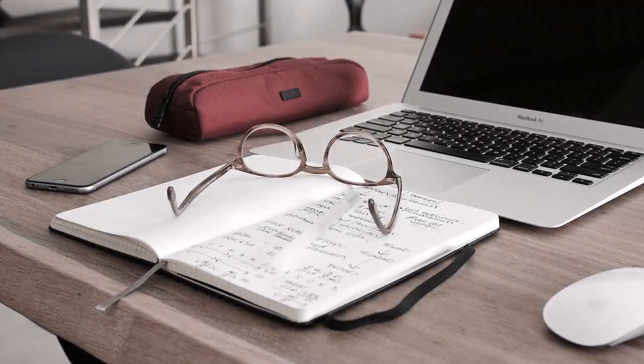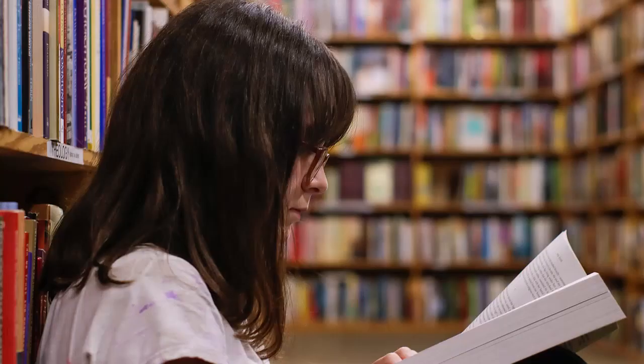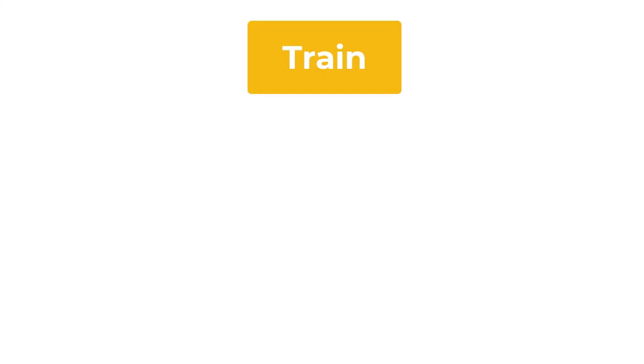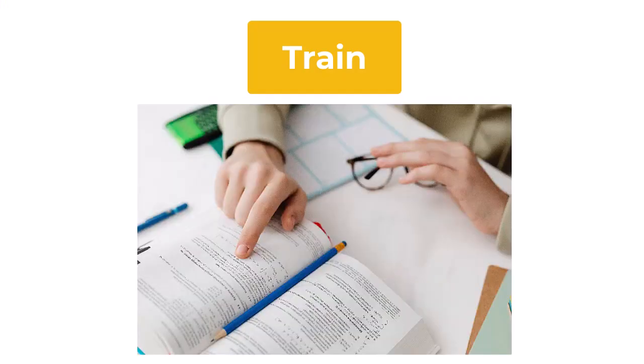Training a model is kind of like studying for an exam. Imagine a model is like a student. If you don't study, you're likely to perform poorly on the exam. Your Train set is like a textbook. It includes the material you need to study, just like the training material for your model is the labeled images.